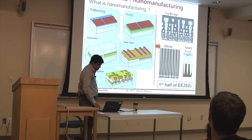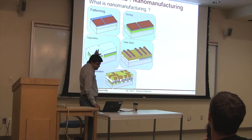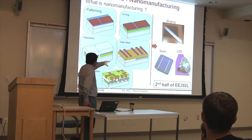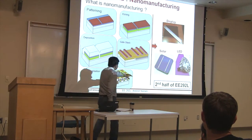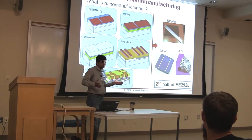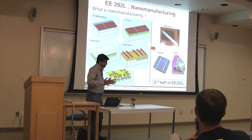The second part of the course looks into applying the same set of techniques but to a different set of applications. We want to keep the same processing techniques but open them to a new spectrum of applications like making displays, solar cells, or LEDs. For example, if you're making solar cells and you talk to that person about doing patterning, they'll look at you like you're from Mars, because nobody in solar uses patterning or lithography.